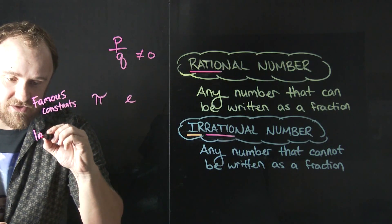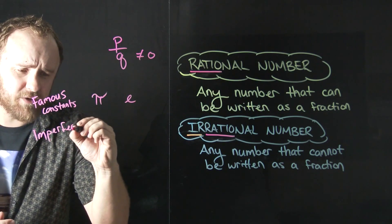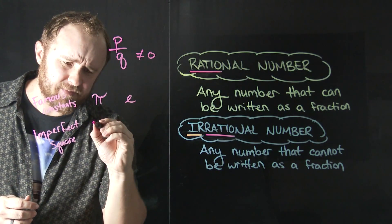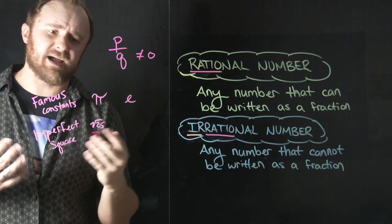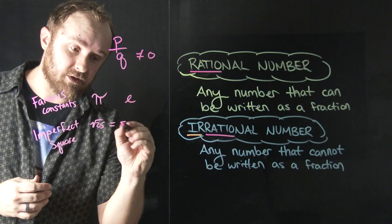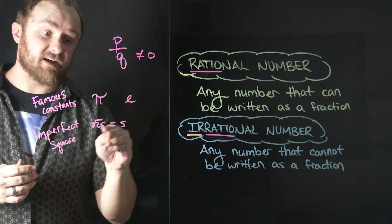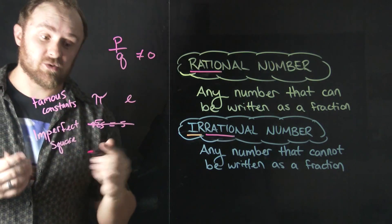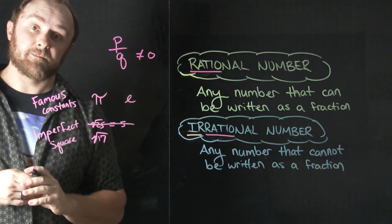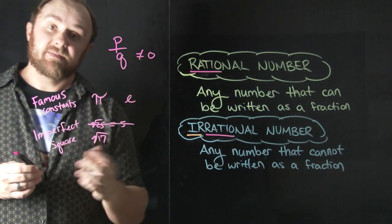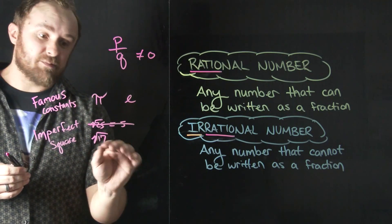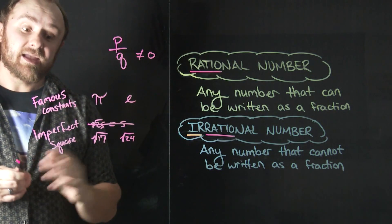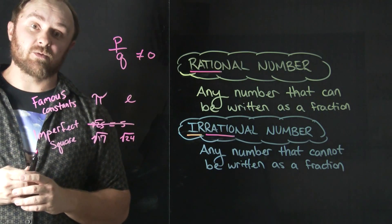We also have imperfect squares. An imperfect square is really just any square root that doesn't work out evenly. For example, we talked last video about the square root of 25. The square root of 25 has an actual pure number that makes this true — 5 is the square root of 25 because 5 times itself is 25. So that's called a perfect square. But irrational numbers are imperfect squares, like the square root of 17. There's no number when multiplied by itself that'll equal 17. And it's not just odd prime numbers — even the square root of 24 is an imperfect square because there's no number times itself that'll equal 24.